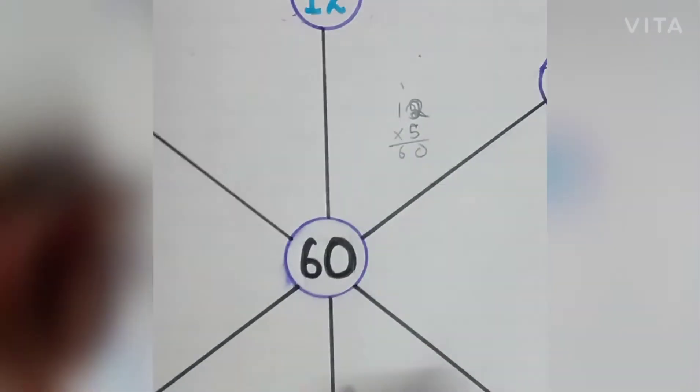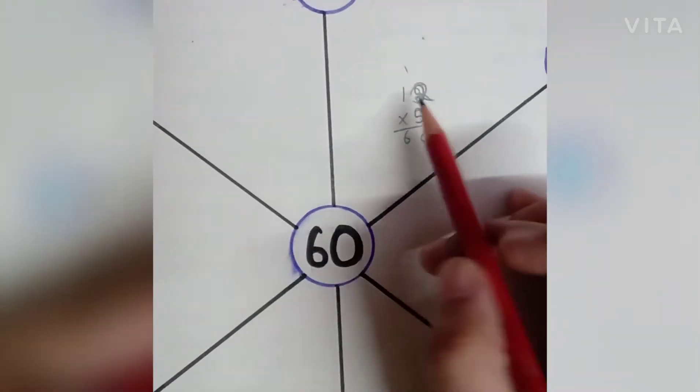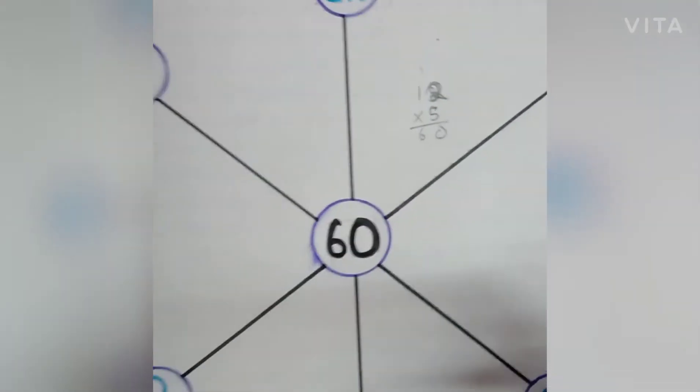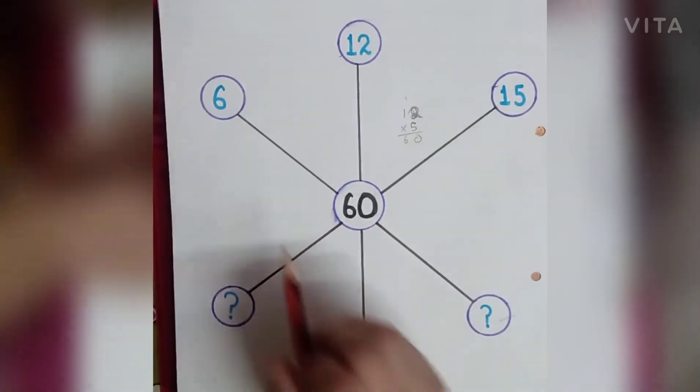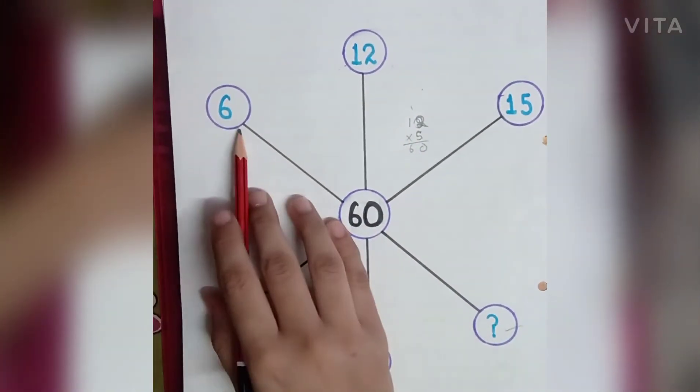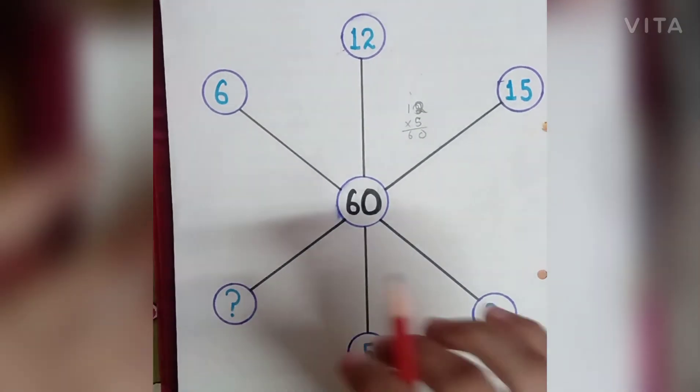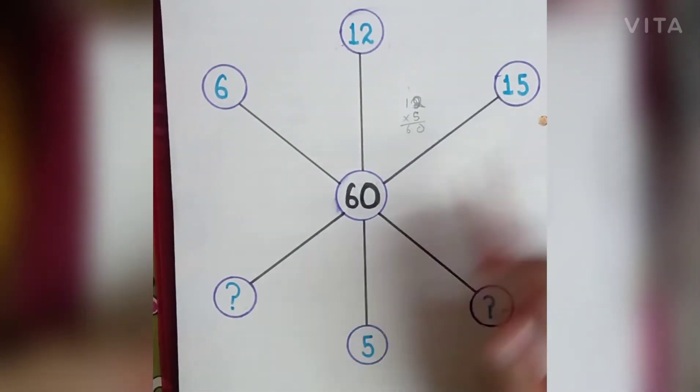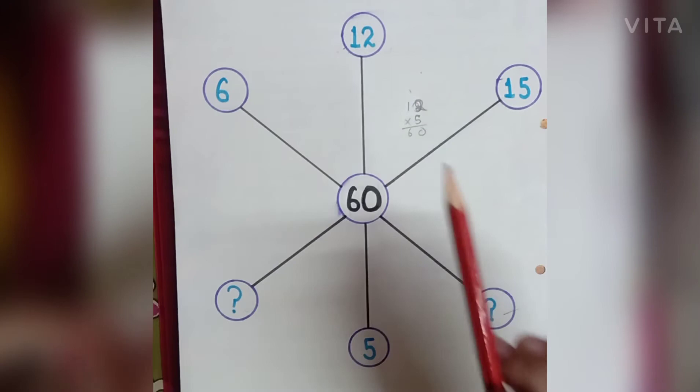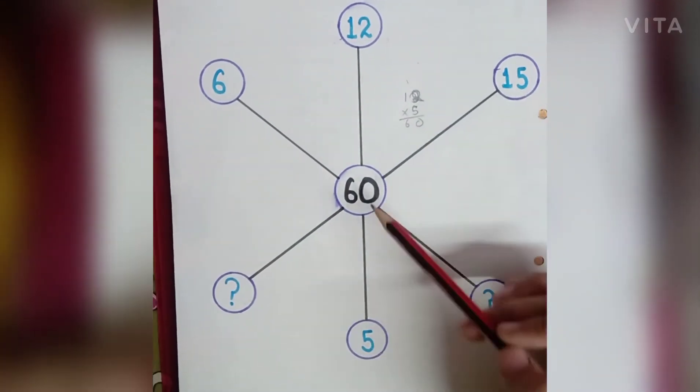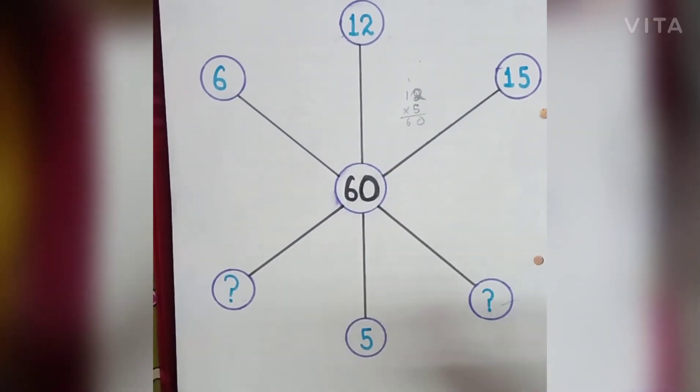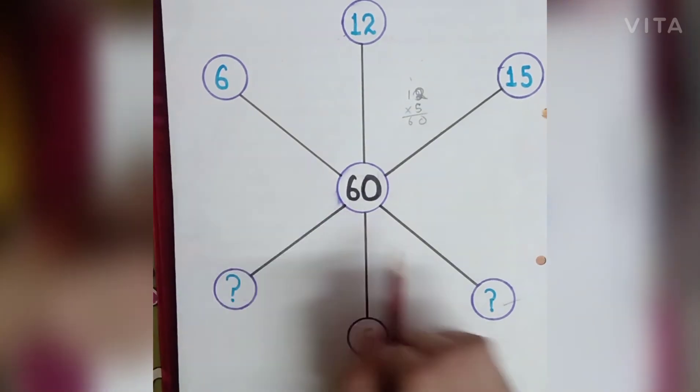We want a number which we multiply with 6 and the answer we get is 60. And we want another number. If we multiply it by 15, then we get answer 60. So as you all know, if we multiply 6 with number 10, we will get answer 60.